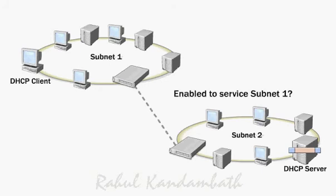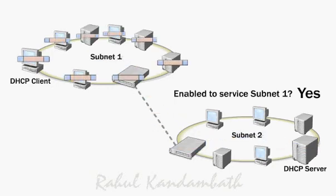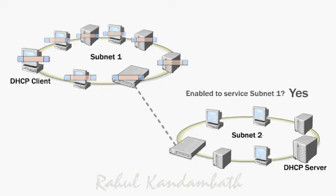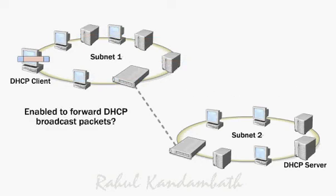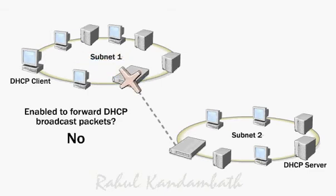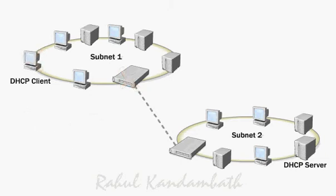If the DHCP server on the remote subnet has been configured to service the subnet that the host is on, then the remote DHCP server can send the TCP/IP configuration data to the client. If you do not enable the router to forward DHCP broadcast packets, the router will reject the DHCP packet and the client will not receive the TCP/IP configuration data.